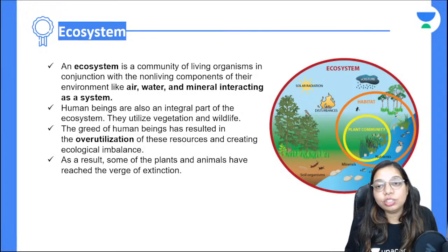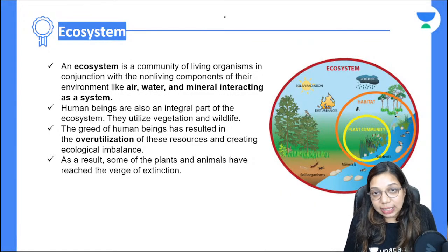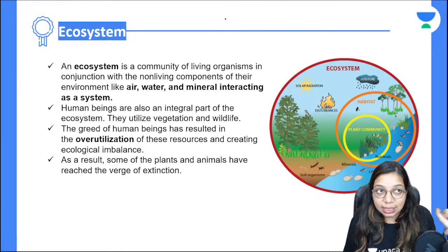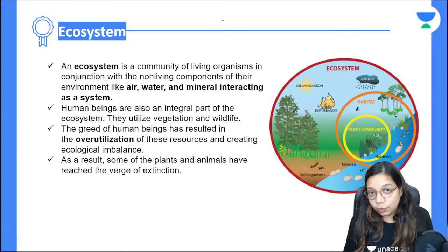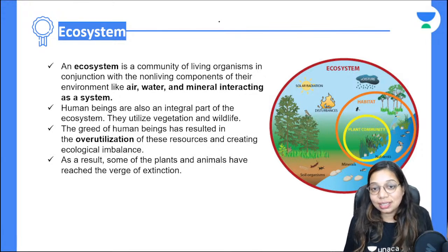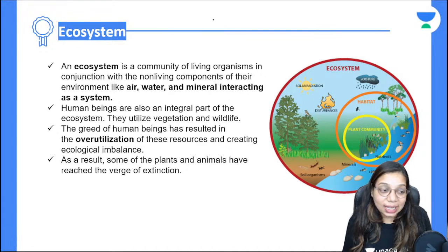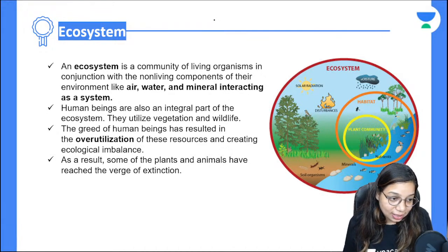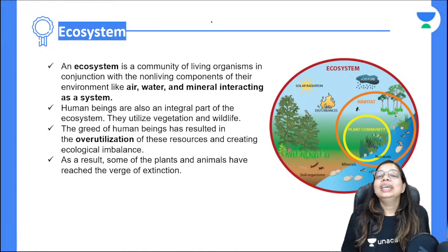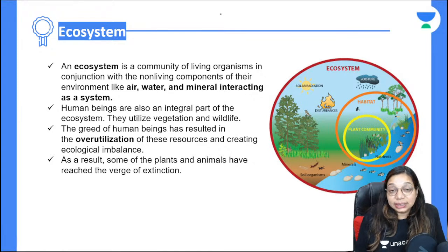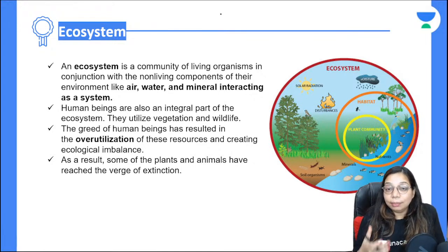Before starting the chapter, we need to understand some terms like ecosystem, flora, fauna, and biodiversity. Please comment in the comment box if you have heard any of these words. First, let's understand ecosystem — it is a very important part of forest and wildlife.